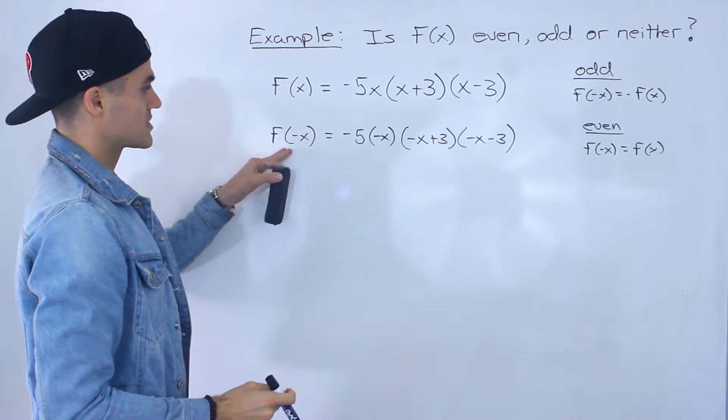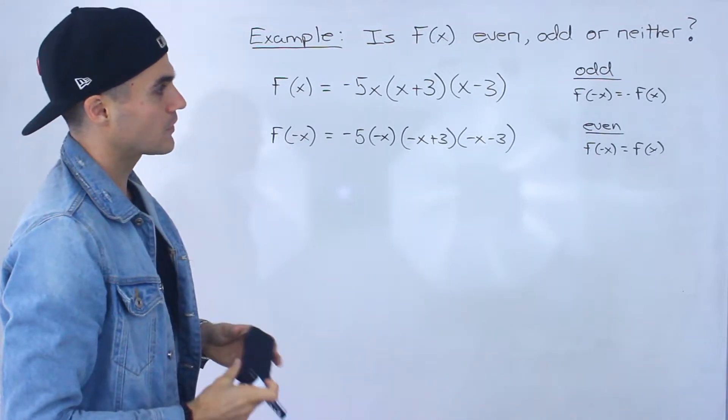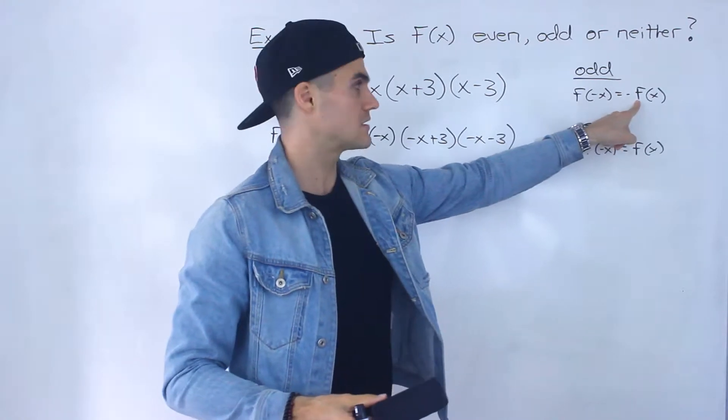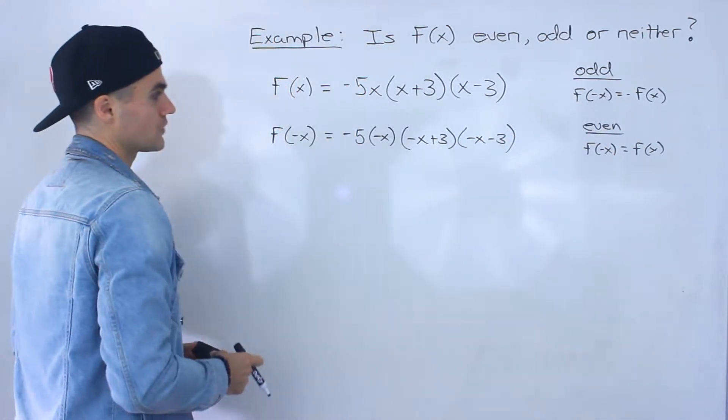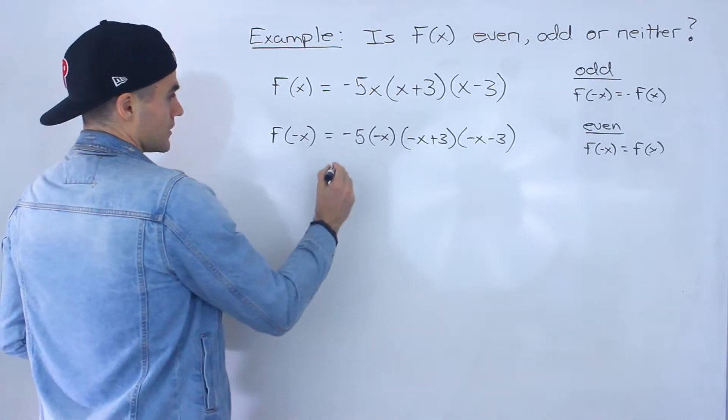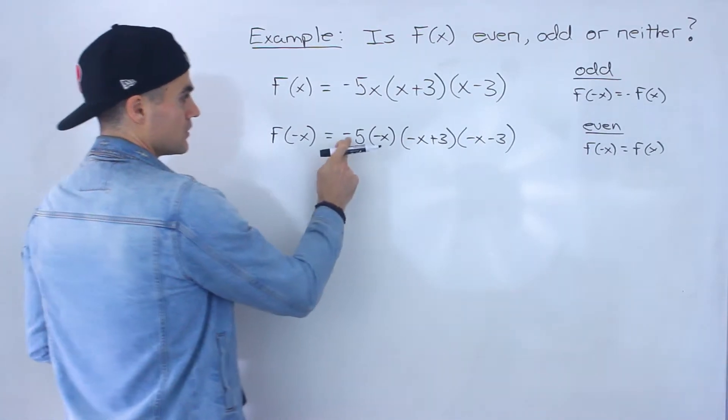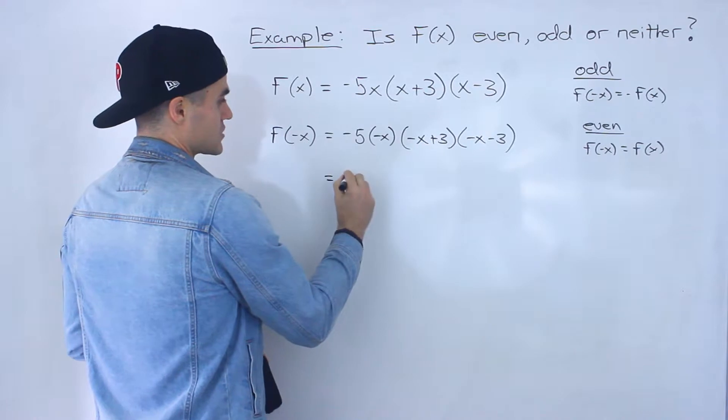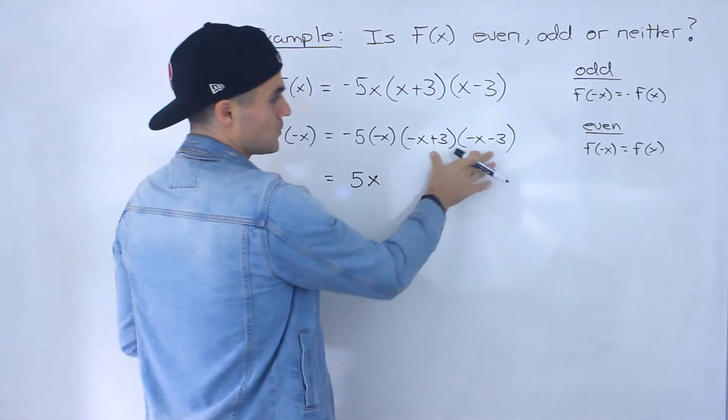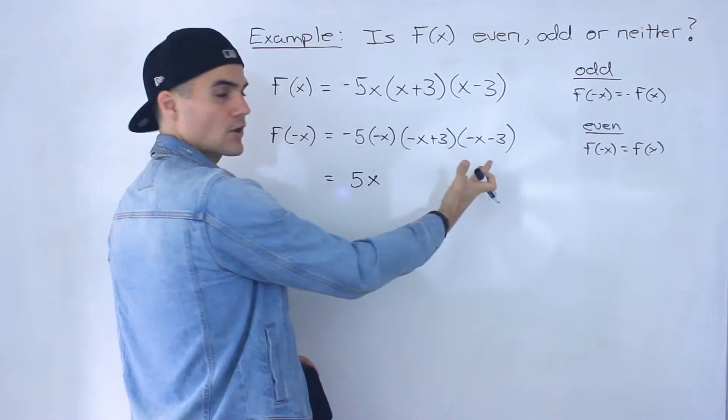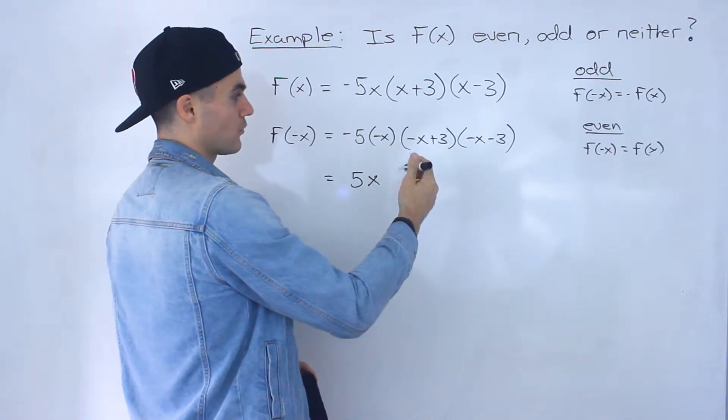We want to find an expression for f of negative x, and then we're going to find an expression for negative f of x and see whether any of these equalities hold here. To simplify this, notice negative 5 times negative x is just going to be positive 5x, and what you do with these brackets is factor out a negative 1 from both of them.